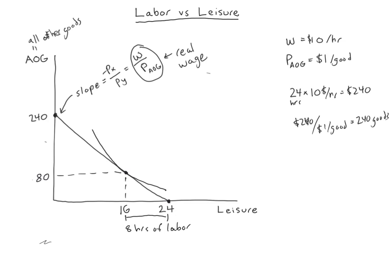In summary: the bottom point on the x-axis is always 24 hours. The y-intercept is the real wage times 24. The slope is −W/P, the real wage, since there's no explicit price for leisure — only the implicit opportunity cost W. Labor doesn't appear explicitly on the diagram, but it's the gap between your leisure and the 24-hour maximum. In the next video we'll think about what happens when wages change — substitution effects, income effects, and the total effect.